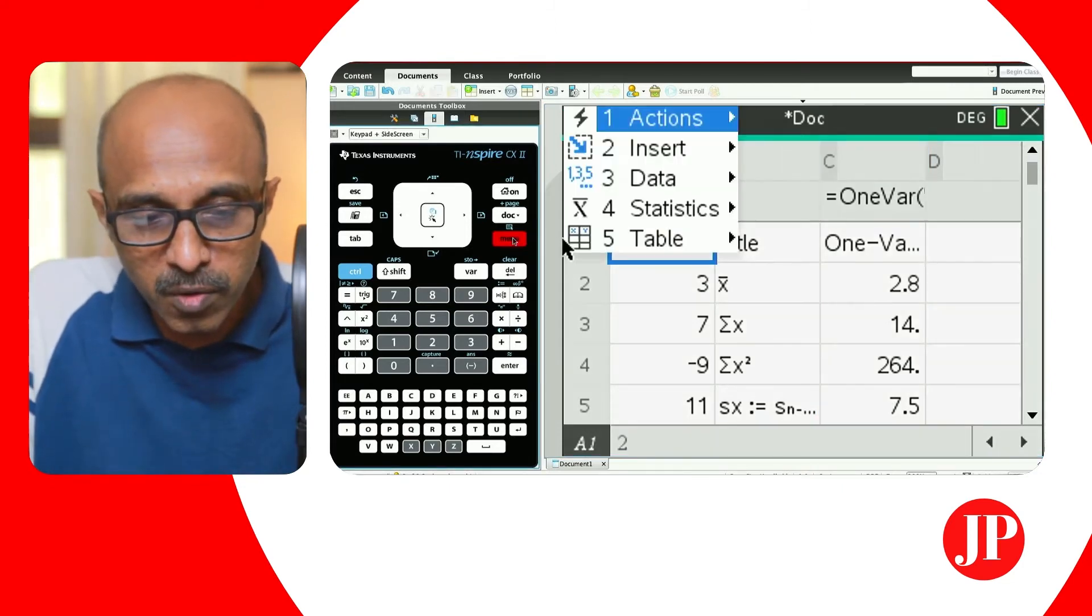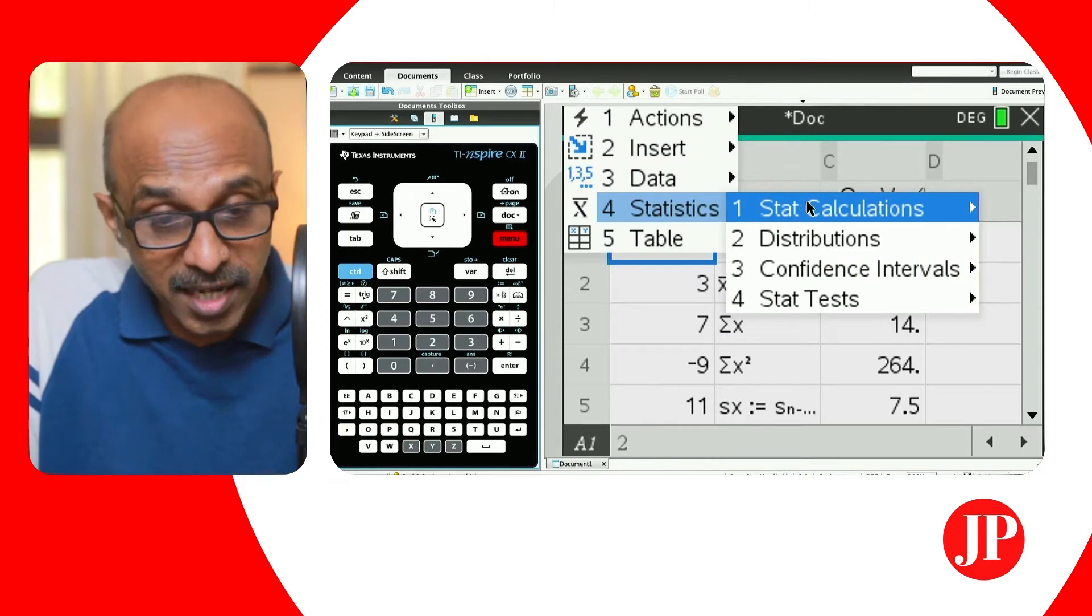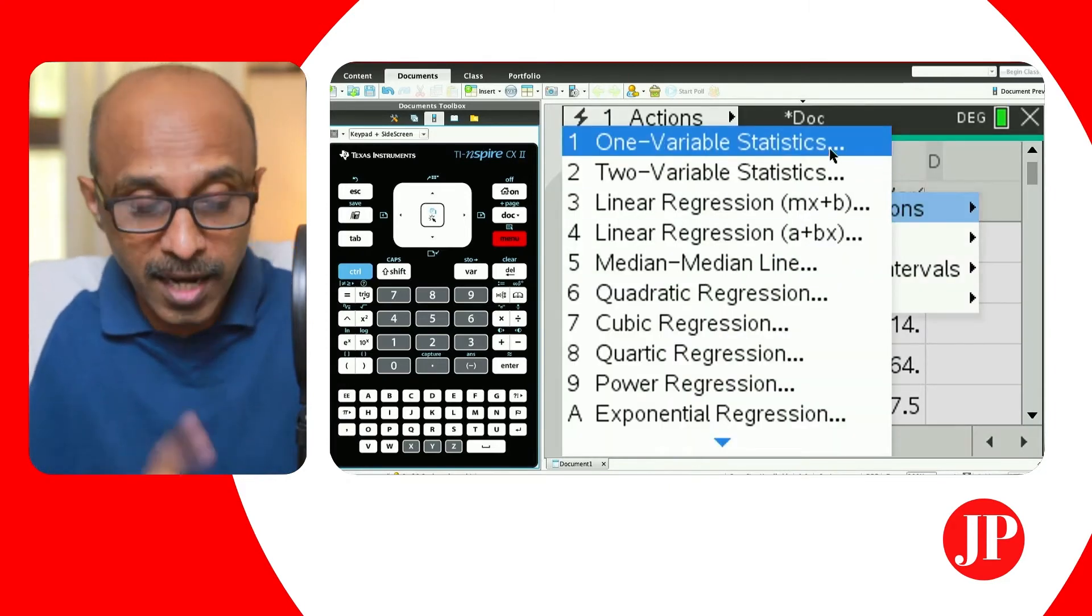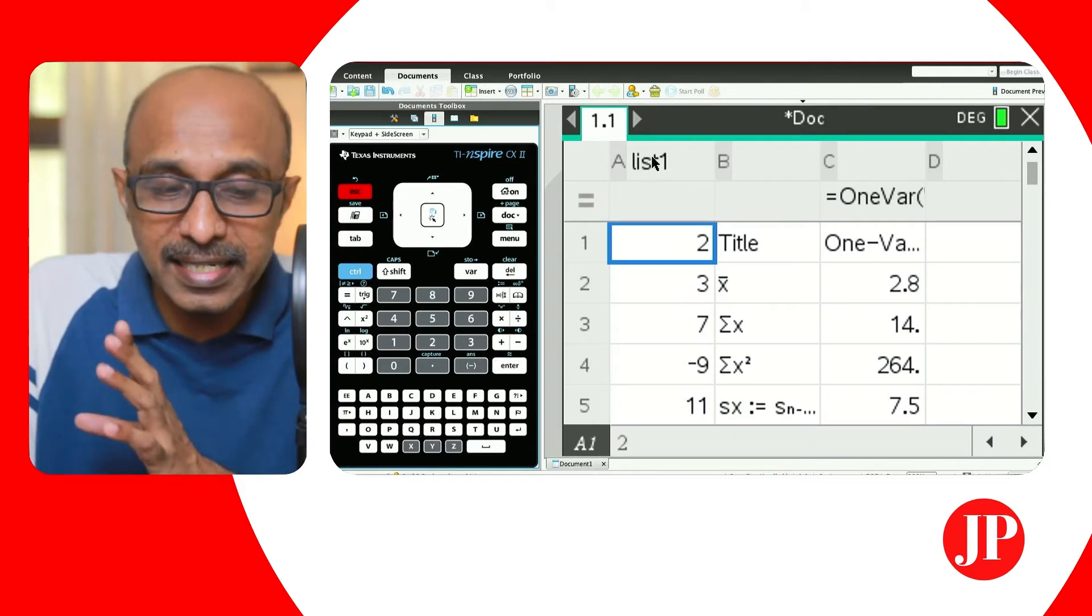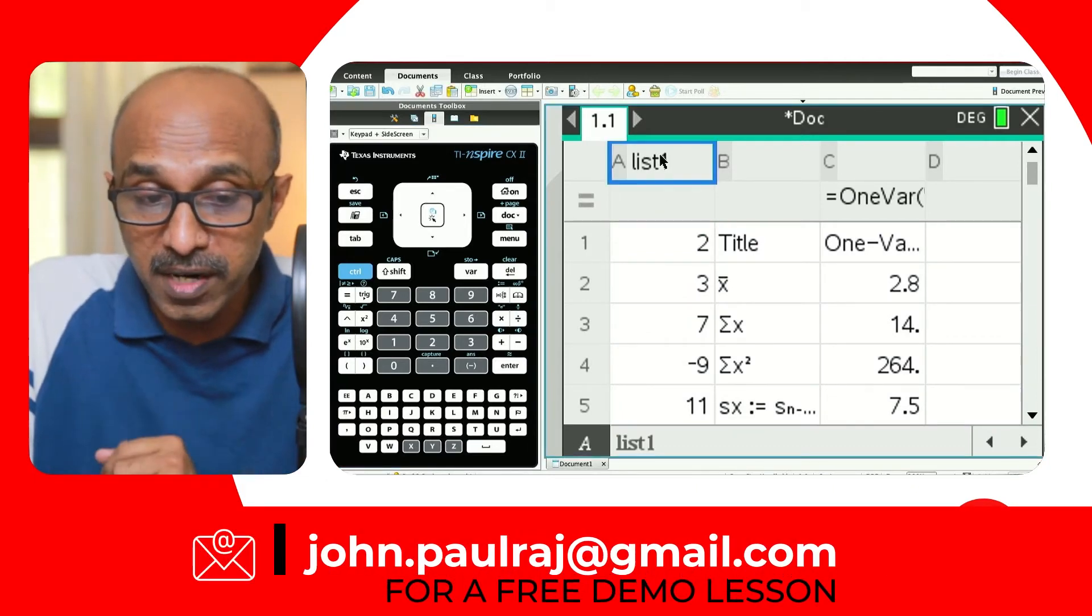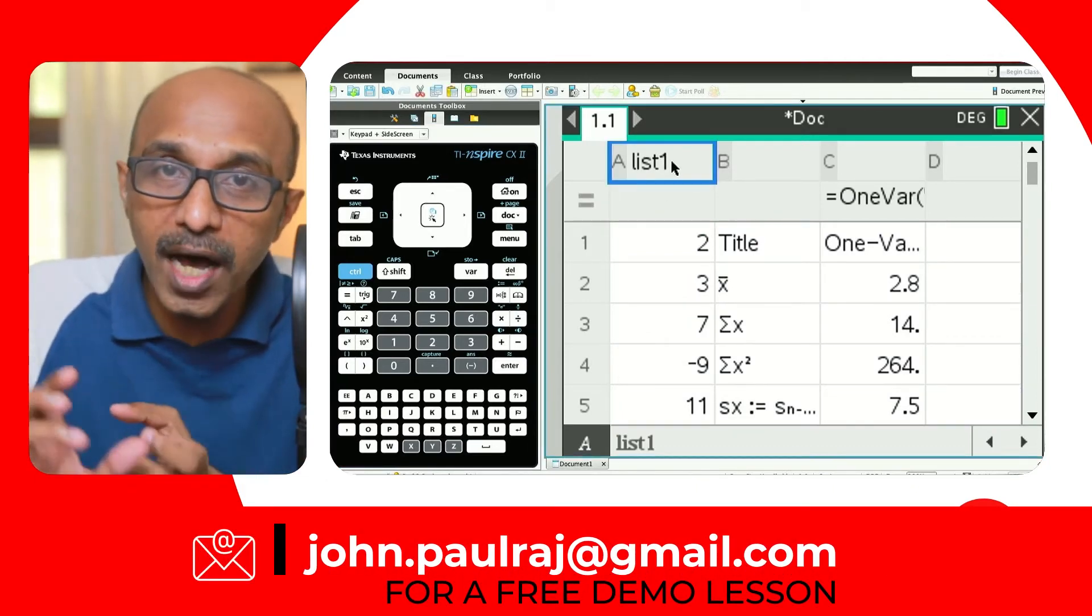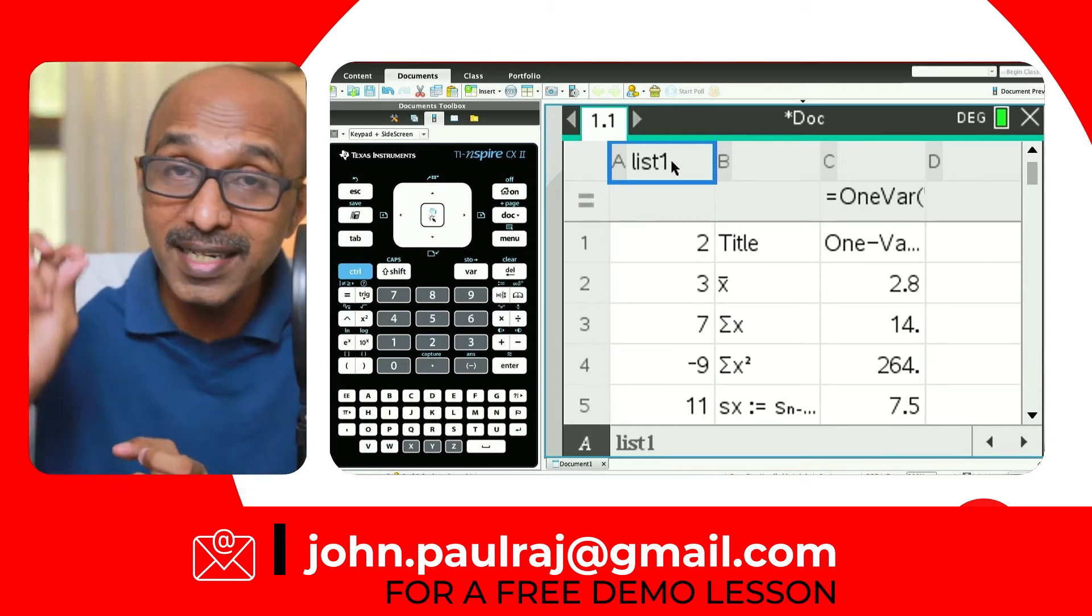I'll just run through it again. So you go to menu, statistics, stat calculations, one variable statistics. Now, the reason I told you that you should be careful how you label that list, that column, list one, I'll explain very clearly. The moment you've labeled it, now it becomes one variable that is registered.